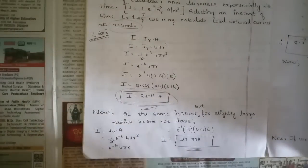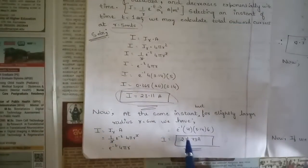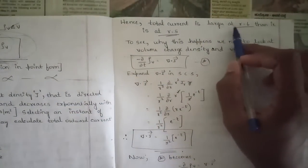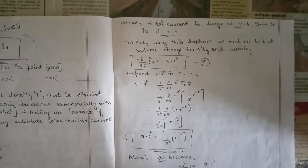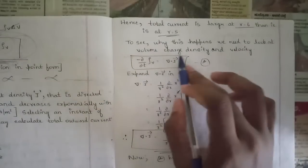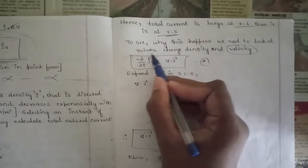Now at the same instant but for a slightly larger radius r = 6 meters, using I = J_r · A, we get I ≈ 27.73 amps. The total current is larger at r = 6 than at r = 5. Whenever the radius increases, we get a larger amount of current. To understand why this happens, we need to look at volume charge density and velocity.